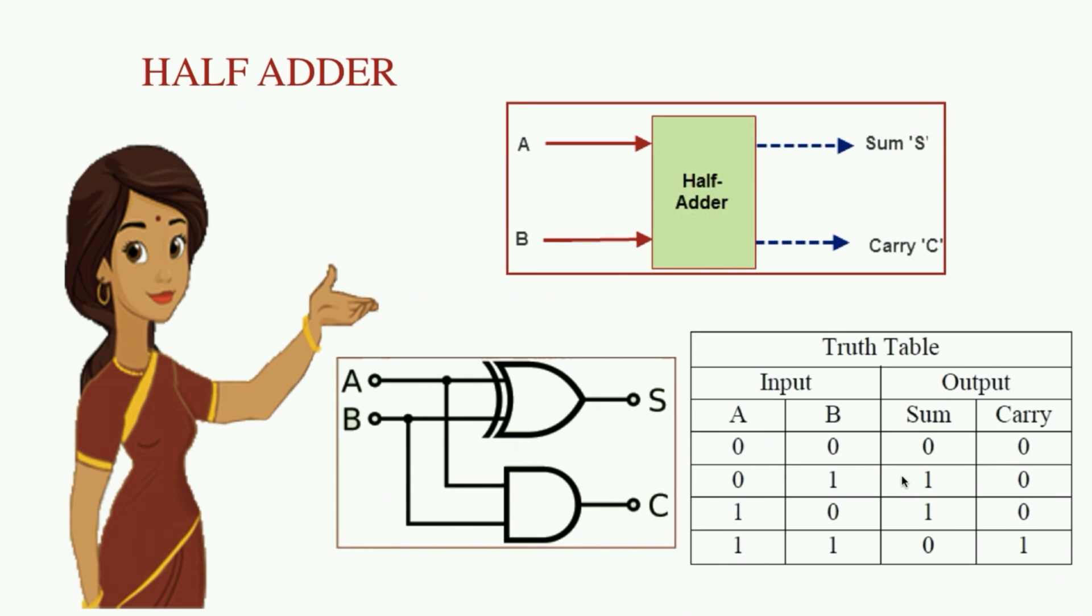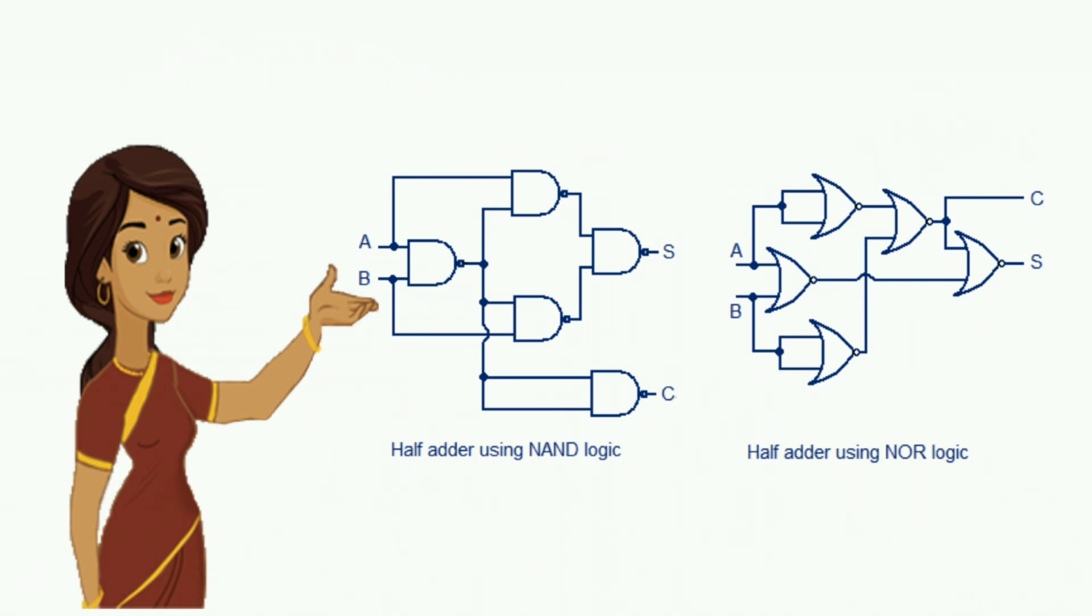The half adder is the simplest of all adder circuits. This half adder circuit can also be implemented using NAND gate and NOR logics because these both are universal logic gates which we have already studied in the fundamentals of digital electronics.